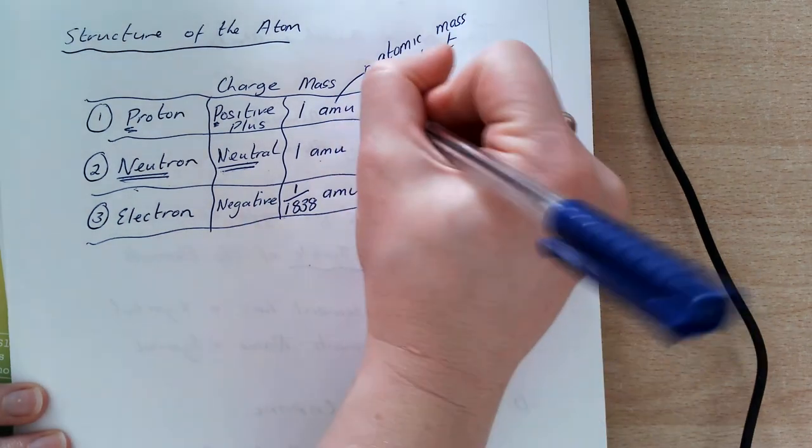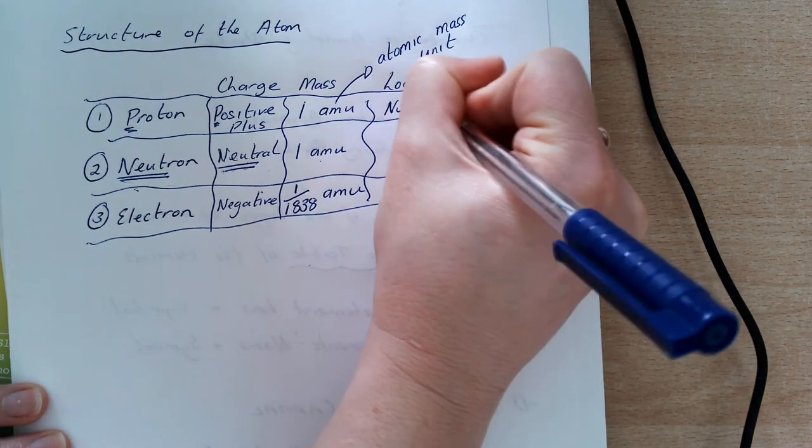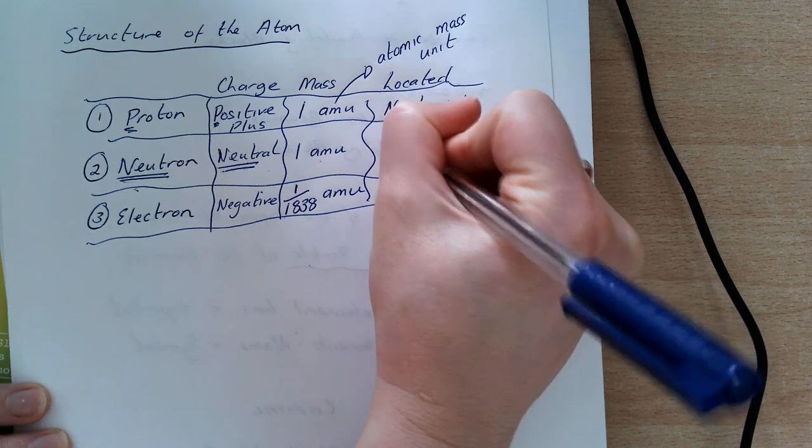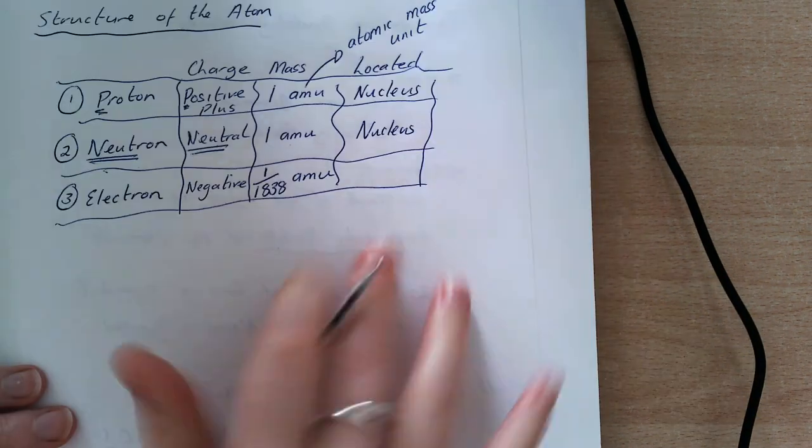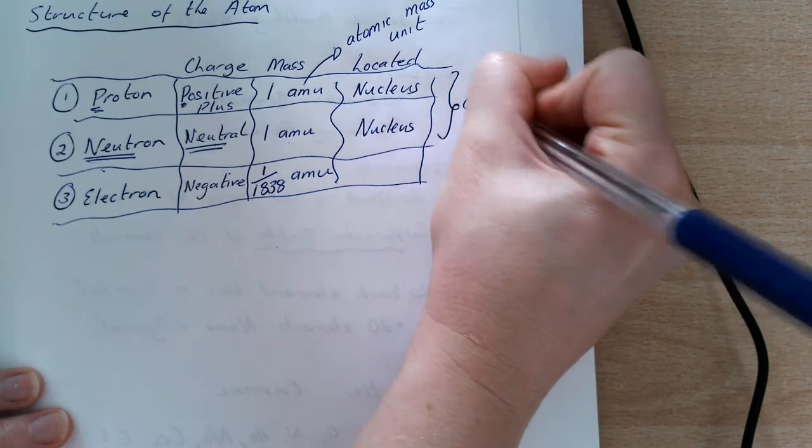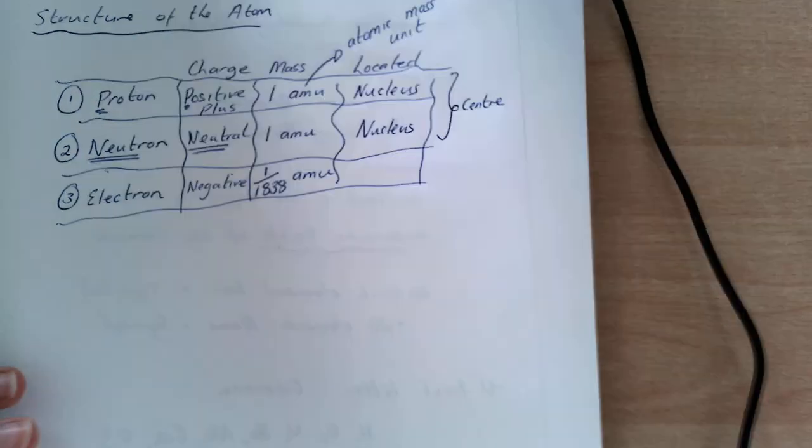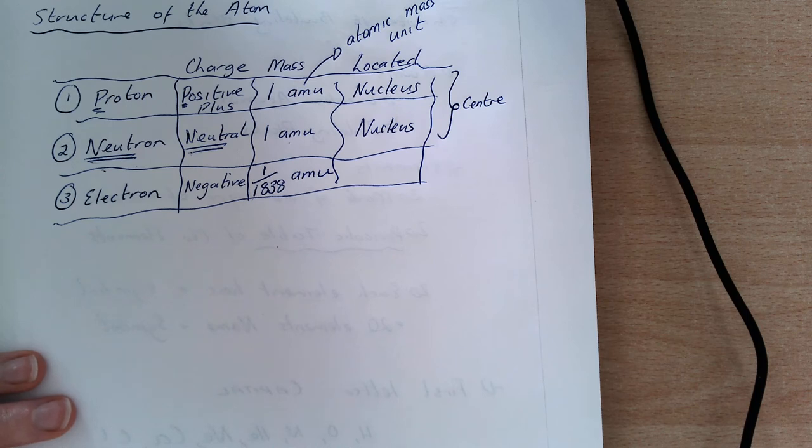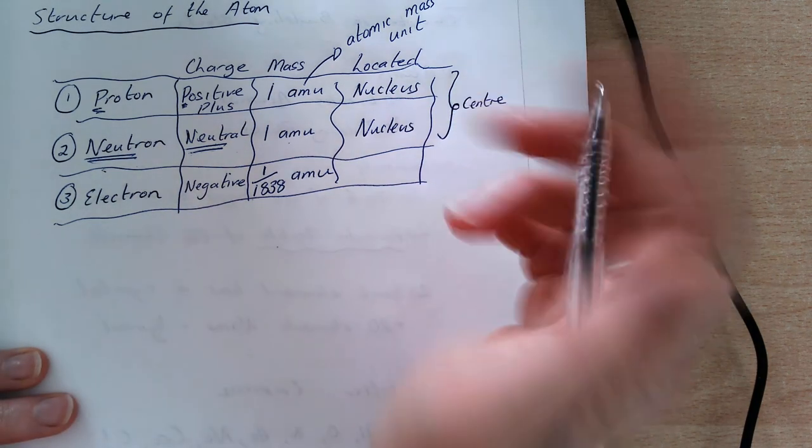My proton and my neutrons are both located in the nucleus of the atom. The nucleus is the scientific word for the center. And we will be looking at drawing these in the next few classes. So this is my center.